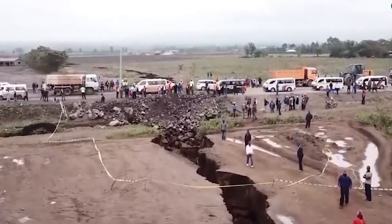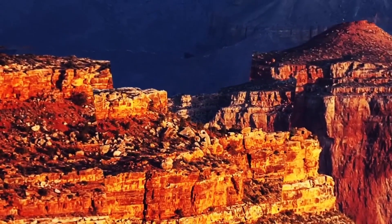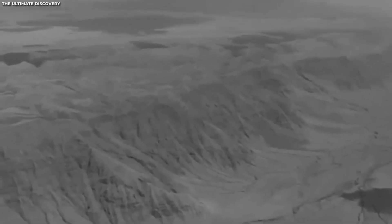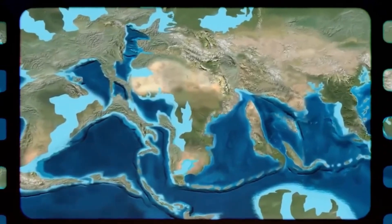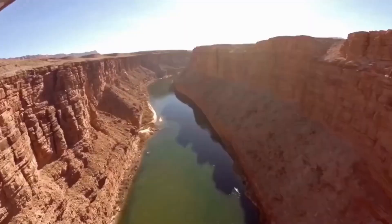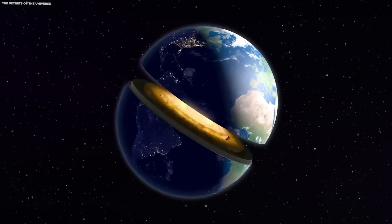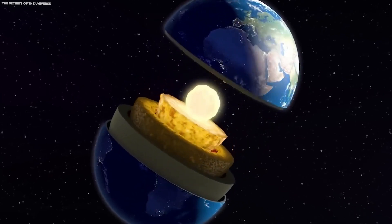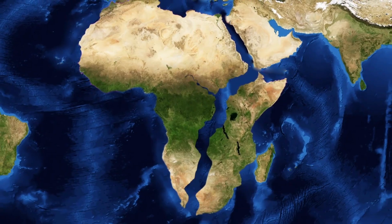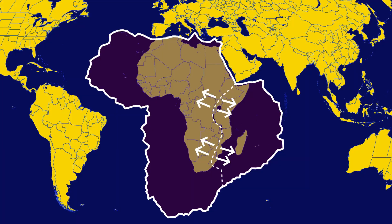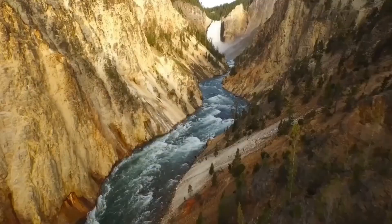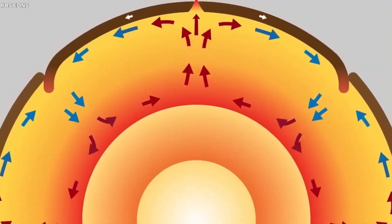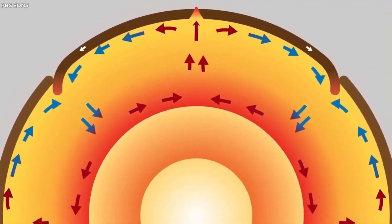As the rift continues to evolve, it reminds us of the ever-changing nature of our planet. While the ultimate splitting of the African continent may be millions of years away, the East African Rift provides a glimpse into the future of our world and underscores the intricate interplay between geological forces and life on Earth. Who knows whether humans will be around to see any of these changes? But discussing the possibilities of the future is important, as it may come earlier than humans think. What are your thoughts on Africa splitting in two? Leave a reply in the comment section below.